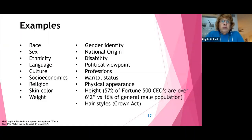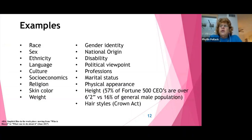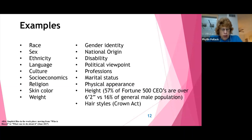We all have a lot of implicit biases. The one about height is very interesting because it states that 57% of the Fortune 500 CEOs are over six foot two, even though the general population is only 16% over six foot, and indeed all of our presidents have tended to be over six foot. The Crown Act is a recent bias that has been recognized — the Crown is an acronym that stands for Creating a Respectful and Open Workplace for Natural Hair.